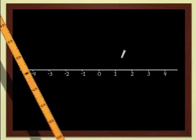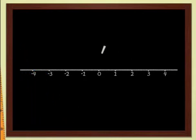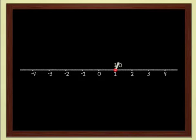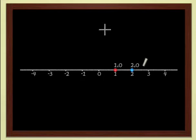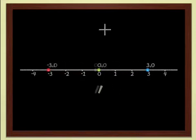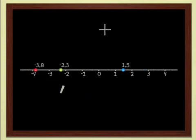Just as we can add numbers, we can add points. Here is a red point on the line and another blue one. Let's add these two points — we get the green point. One plus two equals three. When the red and blue points move, the green point, which is the sum, must move too.